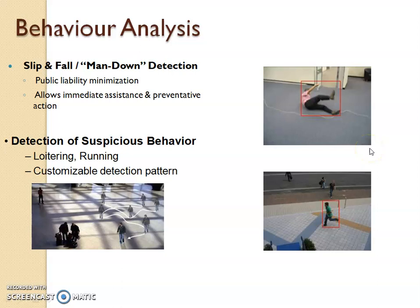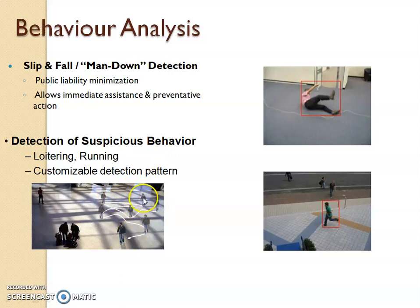Next is behavior analysis. A person can be seen behaving in a suspicious manner and will be flagged. It can detect various events — for example, a man slipping and falling down, which is an important alert trigger for CCTV. A person wandering around a premise — potentially an anti-social element like a terrorist moving around — or somebody running to perform an action: these are all examples of behavior analysis.